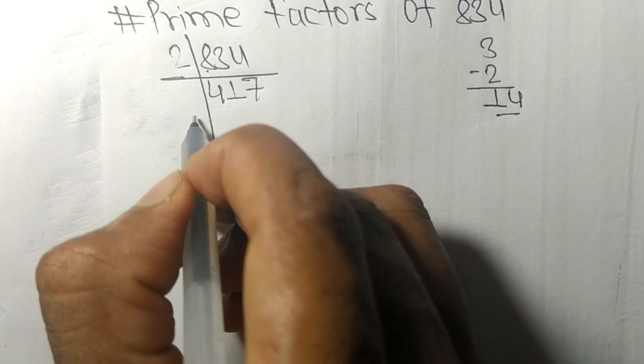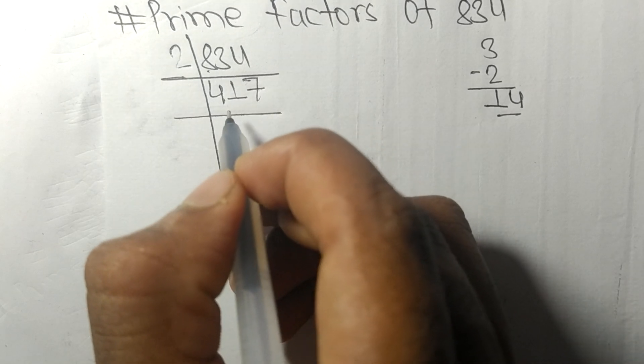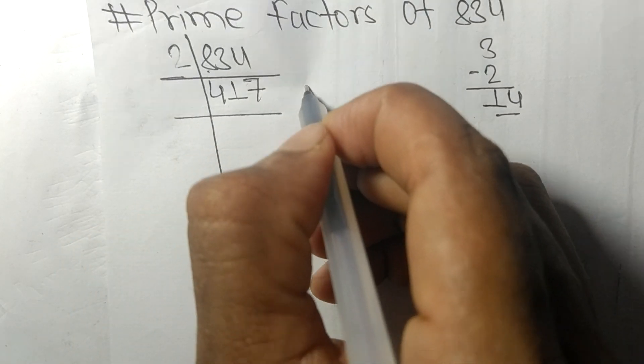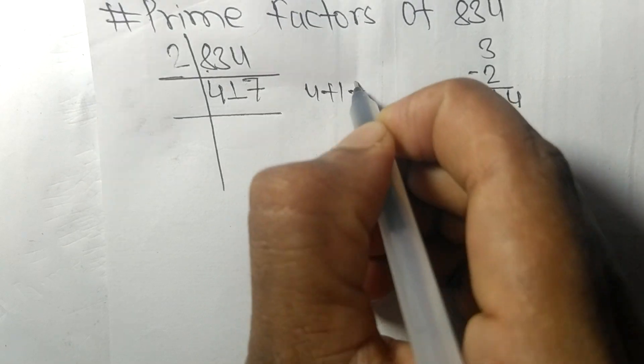So now we got 417. When we add all these numbers, that is 4 plus 1 plus 7, then we get 12.